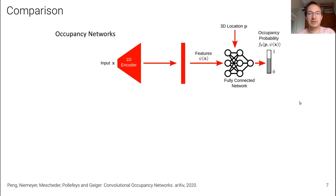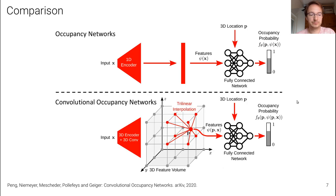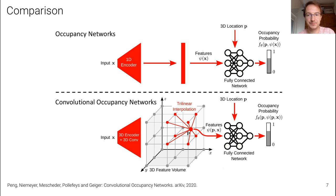Here is the direct comparison of the two methods. On top we see the traditional occupancy network; on the bottom the convolutional variant, where features are no longer a global code but are distributed in 3D space and can benefit from the equivariant properties of convolutional networks in either 2D or 3D space.